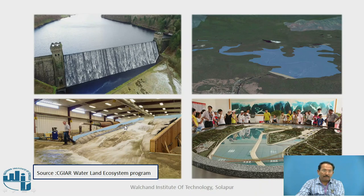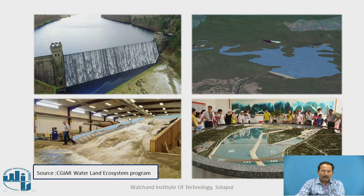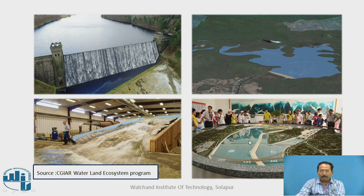Here are some photographs of models. Here in the laboratory they have constructed a model — you can see it is built inside the laboratory. This is a large model of a dam showing the downstream and upstream sides. Water is taken from the spillway to the downstream side. You can see the dam, a river model showing upstream capacity, and how the river behaves — the meandering of the river is also visible. Here a model of a particular dam section is constructed in the laboratory.